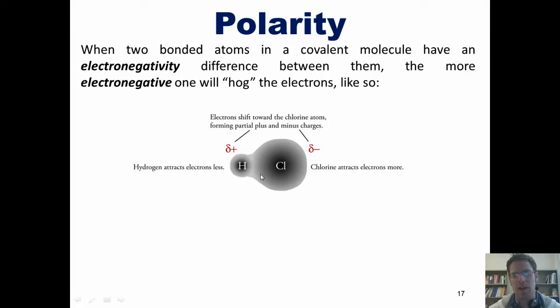In this example, hydrogen chloride or hydrochloric acid, both of these elements are nonmetals. Thus, when they form a bond, it is a shared electron bond or a covalent bond.